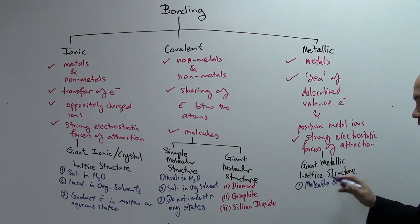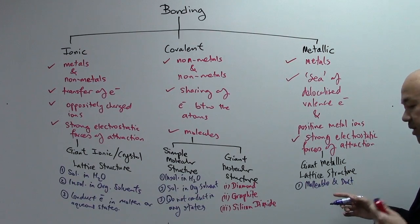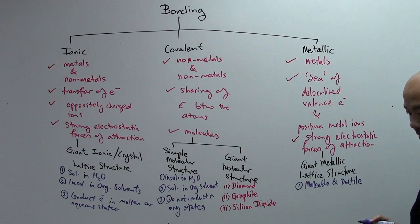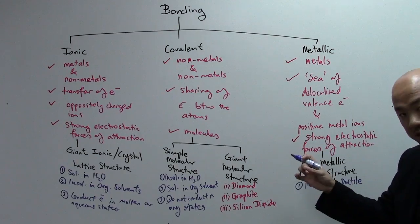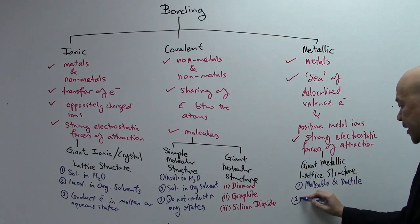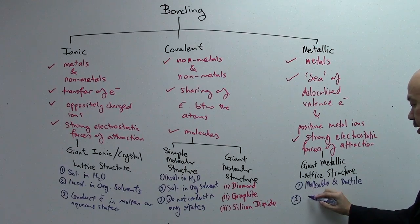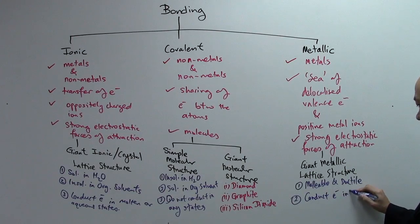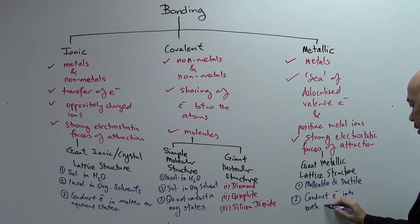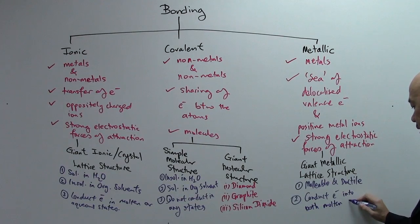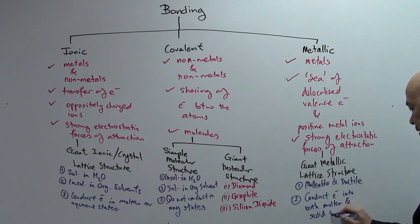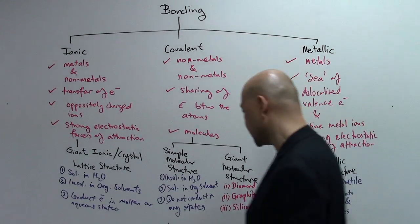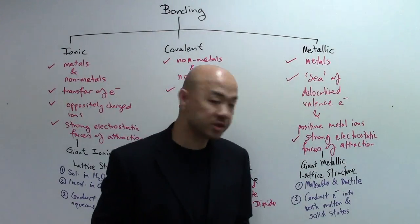Malleable means the ability to be beaten into shapes or hammered into shapes without breaking. Ductility or ductile is about the ability to be stretched without breaking. The second property we're going to talk about is conductivity. So, metal, they conduct electricity in both the molten as well as the solid states. These are the physical properties for the giant metallic lattice structure that you must know.